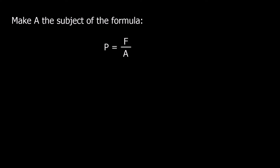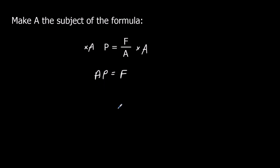Here's another one — make a the subject of the formula. I've got p equals f over a. I want to get a by itself and I don't like it on the bottom, so I'm going to start by multiplying both sides by a to get rid of the divide by doing a times. On the left I've got p times a, which is ap, and on the right I've just got f. To get a by itself I've got a times p, so I divide both sides by p, which leaves me with a equals f over p.